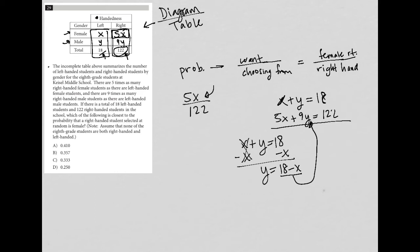I can then use that to substitute this Y here for 18 minus X. And in doing so, I end up with an equation: 5X plus 9 times (18 minus X) equals 122. So I end up with an equation that only has X values.